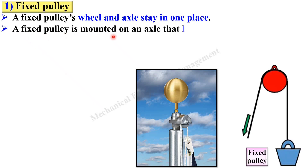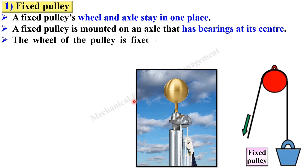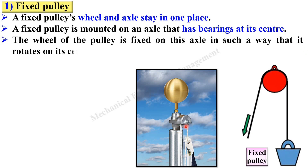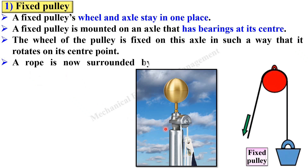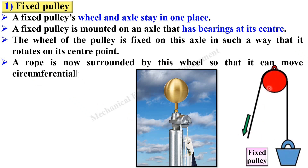A fixed pulley is mounted on an axle. Here you can see this is the fixed pulley which is mounted on this axle, that is perpendicular to this plane of the pulley, and that has a bearing at its center. The wheel of the pulley is fixed on this axle in such a way that it rotates on its center point, so this pulley can rotate about this fixed axle. The rope is surrounded by this wheel so that it can move circumferentially.